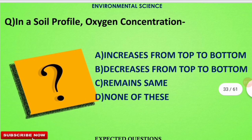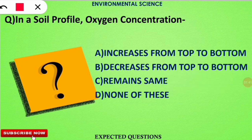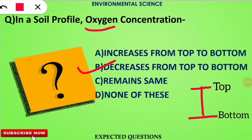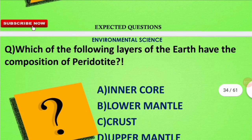The next question is: in a soil profile, what happens to oxygen concentration? The correct option is B — the oxygen concentration decreases as we go from the top to the bottom of the soil profile. That is why anaerobic bacteria and anaerobic organisms are found mostly at the bottom of the soil profile, where there is a lack of oxygen.